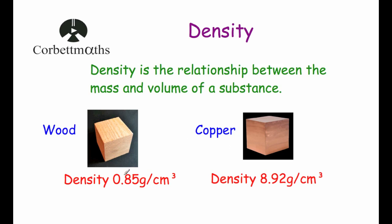The density of wood is 0.85 grams per centimeter cubed, whereas the density of copper is 8.92 grams per centimeter cubed. So that means if you had one centimeter cubed of wood it would have a mass of 0.85 grams, and if you had a centimeter cubed of copper it would have a mass of 8.92 grams. That's why if you've got two objects of the same volume, the one made of copper would be much heavier than the one made of wood.